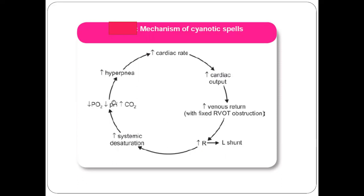Hypoxia, increased CO2, and acidosis stimulate the respiratory center. In children below 2 years, the immature respiratory center responds to hypoxia and acidosis with increased hypernea — increased depth and rate of breathing. This increases cardiac rate and cardiac output. The deep breathing also increases venous return to the right side of the heart, leading to more mixing of right and left ventricular blood due to RVOT obstruction, perpetuating the cycle.